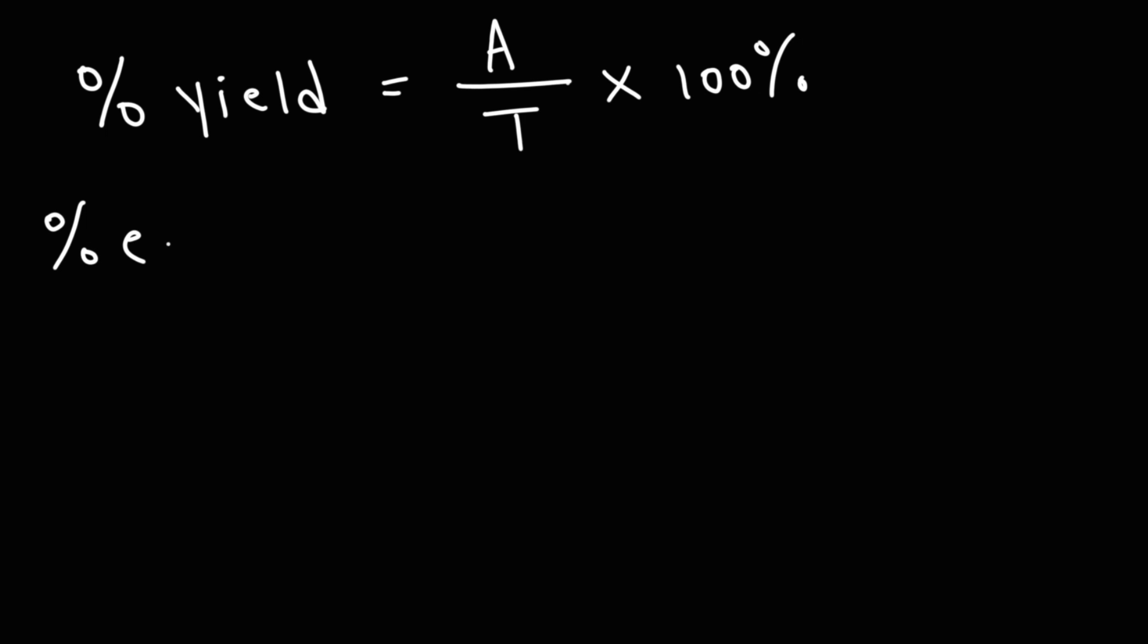Now, sometimes you may need to calculate percent error. This is not as common as percent yield in a typical chemistry class, but if you do need to calculate it, here's the formula. Percent error is actual minus the theoretical, but it's really the absolute value of that difference. So whether you subtract a by t or t by a, you're still going to get a positive result if you place it within the absolute value symbol. So it's the actual yield minus the theoretical yield divided by the theoretical yield times 100%. So that's how you can calculate percent error.